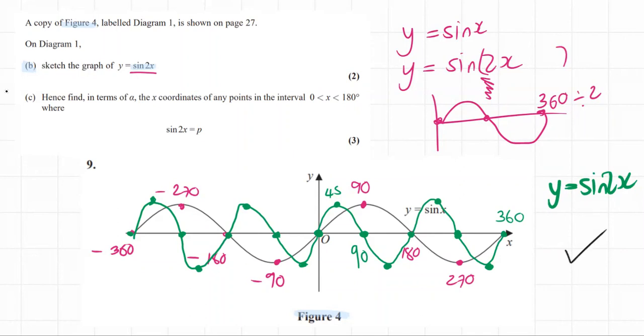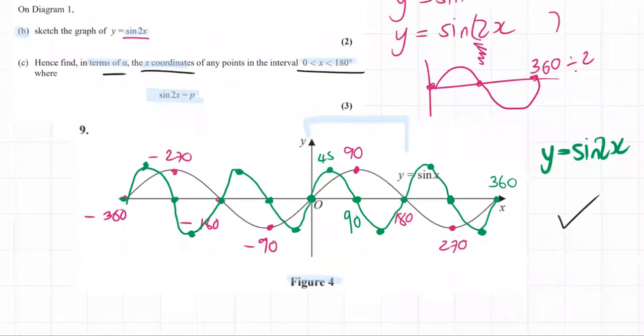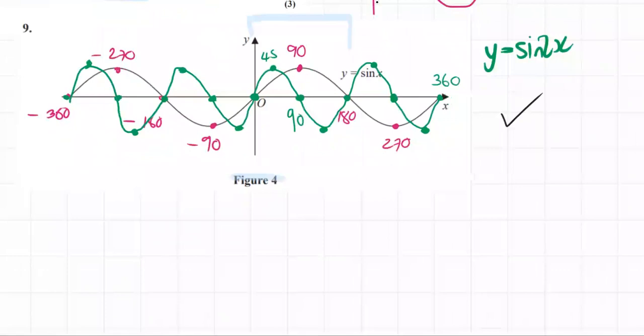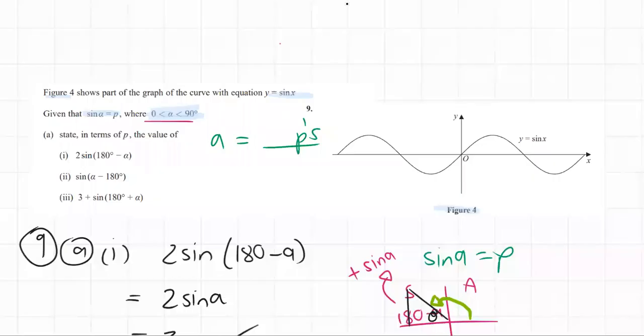Number c. Hence find in terms of a the x coordinates of any points in the interval of zero to 180. So we're looking at zero to 180, which is here. And in terms of a, x only any points from zero to 180 where our sine 2x is equal to p. So we're going to write where our graph, our green graph, is equal to p. So we want number c: sine 2x equal to p.